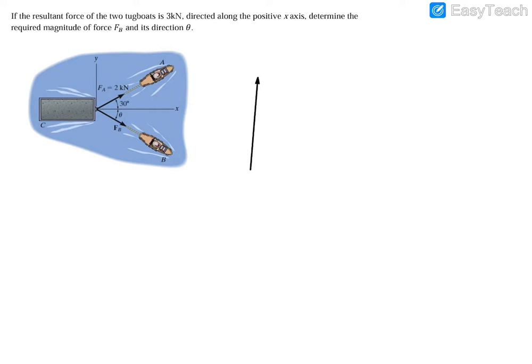So if we put these forces on the x and y-axis like this, we'll have a two kilonewton force going something like that, and then we'll have some unknown force FB going something like this. We're told that this here is two kilonewtons, and then this here is 30 degrees.